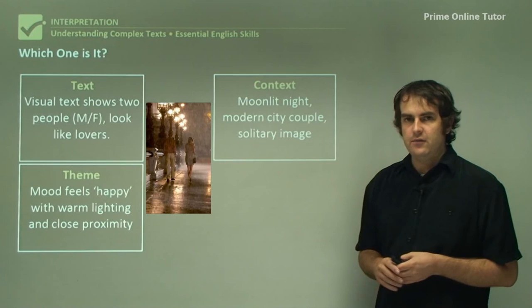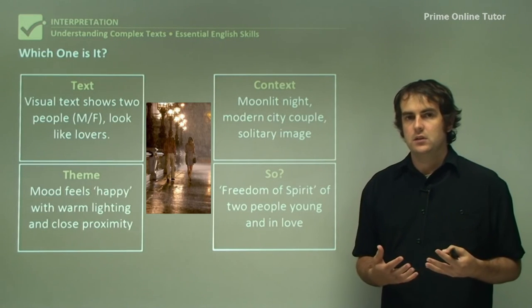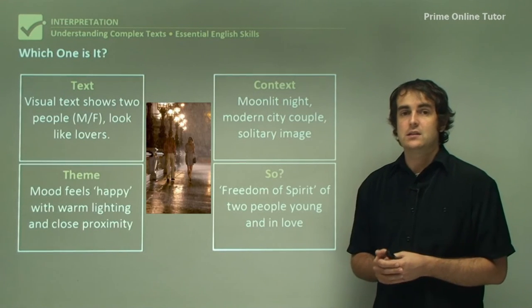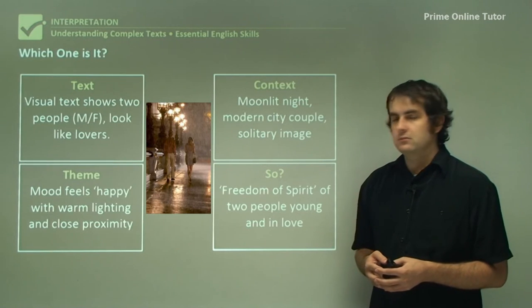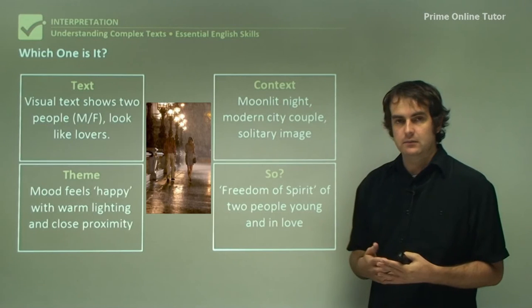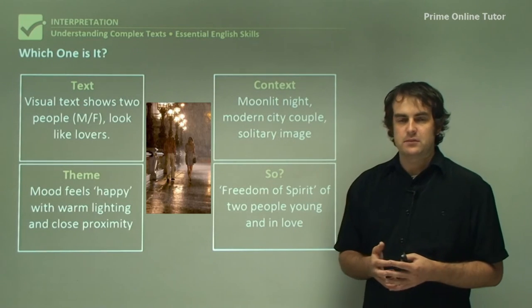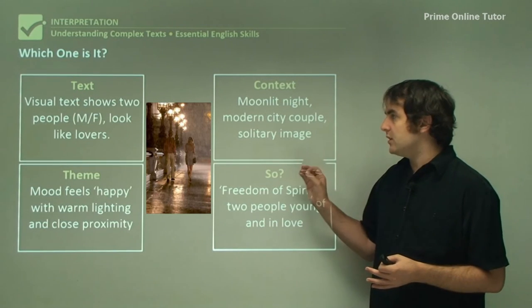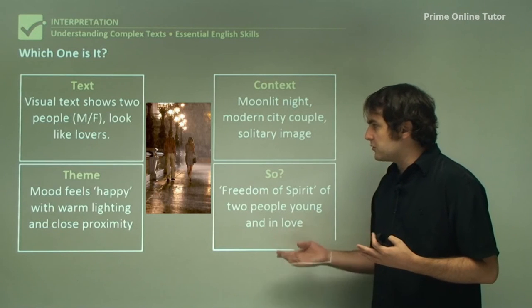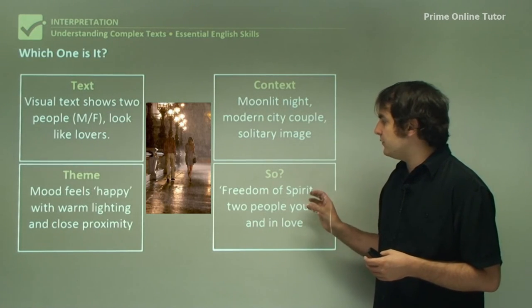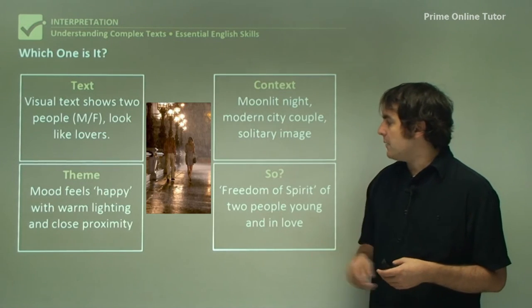Combining all those things together — what can we suggest the answer is? Freedom of spirit of two people young and in love. People who are free in spirit because they're almost careless enough to go walking through the rain, free and in love and not caring what they look like to other people. That is what this image represents. You could argue differently, but based on the evidence here, this is an interpretation based on those earlier possibilities. It doesn't necessarily have to mean this, but it's a fairly good representation because we've looked at the text, the context, and the theme — the mood and the ideas the image seems to be giving off — and we've got a description which very much fits in with all those things. Freedom of spirit fits in with the aesthetic of them being lovers, the modern setting, the moonlit night, and the happy mood.